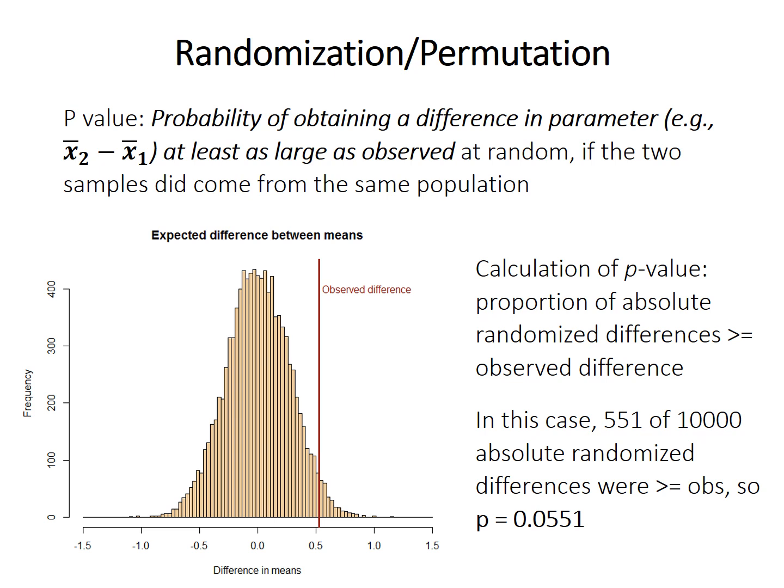So we just look to see how many of the absolute randomized differences. Remember, we have to look at both tails of the distribution, not just the one where our observed difference is. So we look at the proportion of absolute randomized differences that are greater than or equal to the observed difference. So in this trial, I did 10,000 random permutations and 551 of those were at least as extreme in either direction as the observed difference in means. So our p-value is just 551 divided by 10,000 or 0.0551.